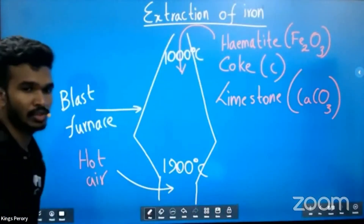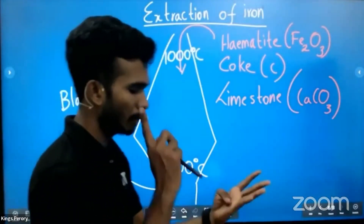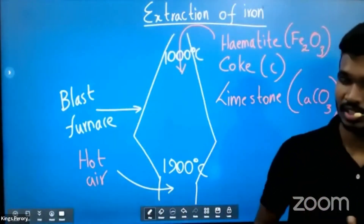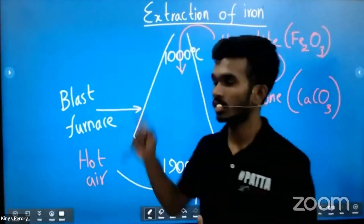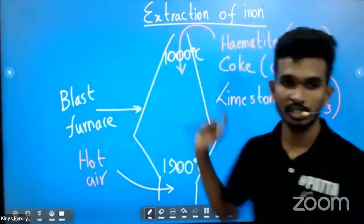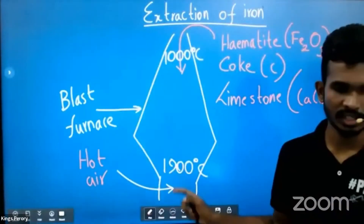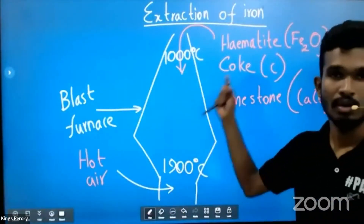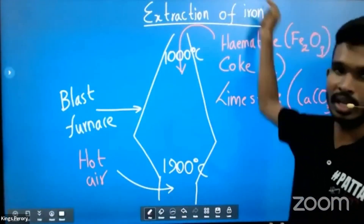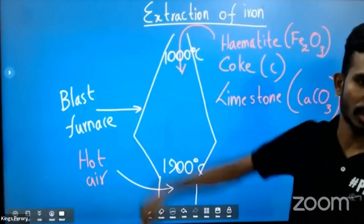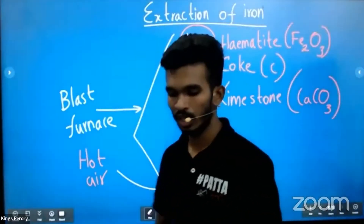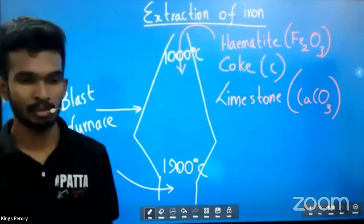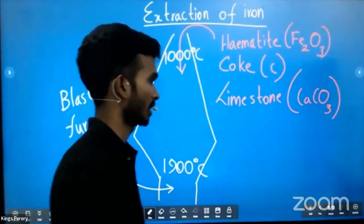Quick review: the setup for iron extraction is a blast furnace. Temperature range: 1000 to 1900 degrees Celsius. What is blown from the bottom? Hot air. What are the raw materials sent from the top? Hematite (Fe2O3), coke (carbon), and limestone (calcium carbonate).